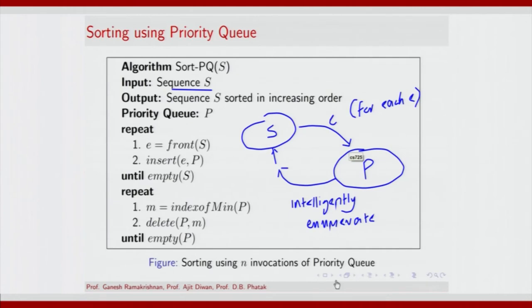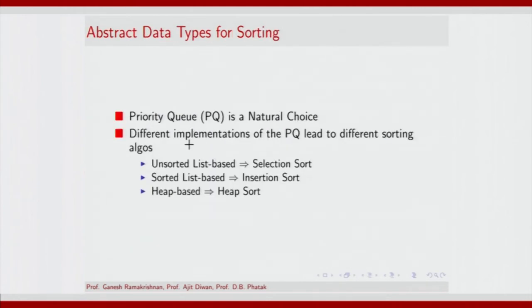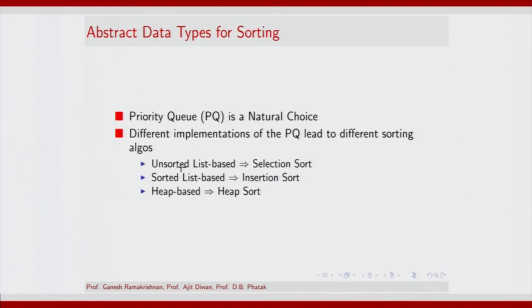Let us discuss some specific implementations. When the priority queue is an unsorted list or an unsorted array, the algorithm for sorting is called selection sort. The choice of list as against the choice of an array does not make any significant difference.